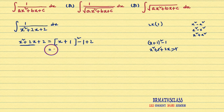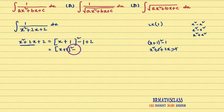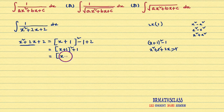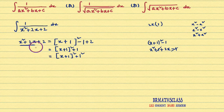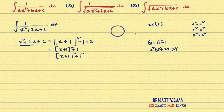That equals x plus 1 whole square minus 1 plus 2. Minus 1 plus 2 is plus 1. So that equals x plus 1 whole square plus 1, which can be written as 1 square. You observe here, this expression is in the form of x square plus a square. My main intention is to write ax square plus bx plus c into any one of these forms. So here, I got the x square plus a square form.